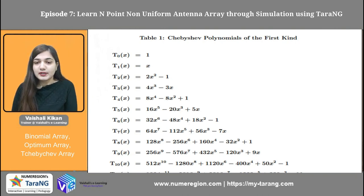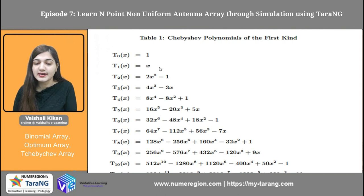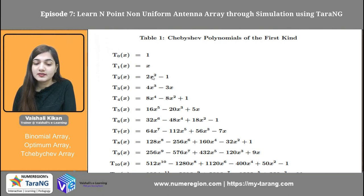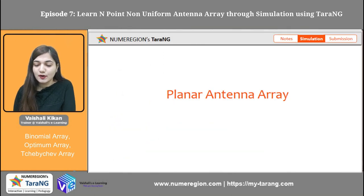Coming to the Chebyshev polynomial of the first kind, we have various polynomials. For the 0th order, T0 = 1. For T1 = x, which means for the first element I have amplitude 1, and for the x^0 location we have amplitude 0. For T2(x) = 2x^2 - 1: for x^2 we have amplitude 1, for x we have amplitude 0, and for the final coefficient we have amplitude -1 — here we take phase 180 degrees and amplitude 1. Similarly I can have T3(x), T4(x), T5(x). We had the polynomial for T5(x) and we made the simulation results for T5(x) only — that is the fifth Chebyshev polynomial.